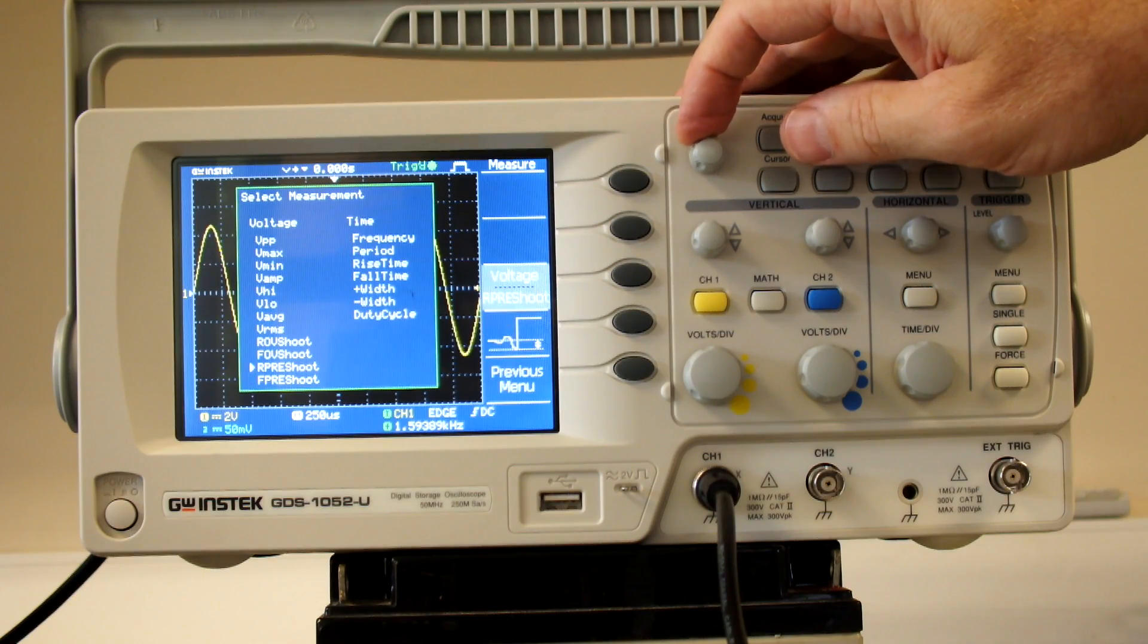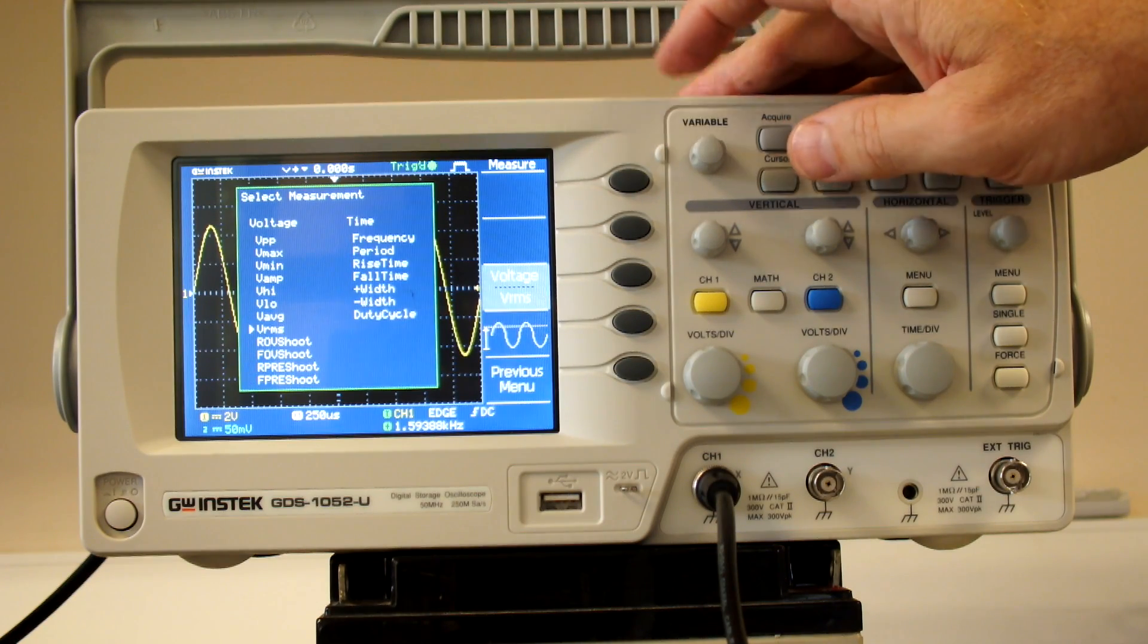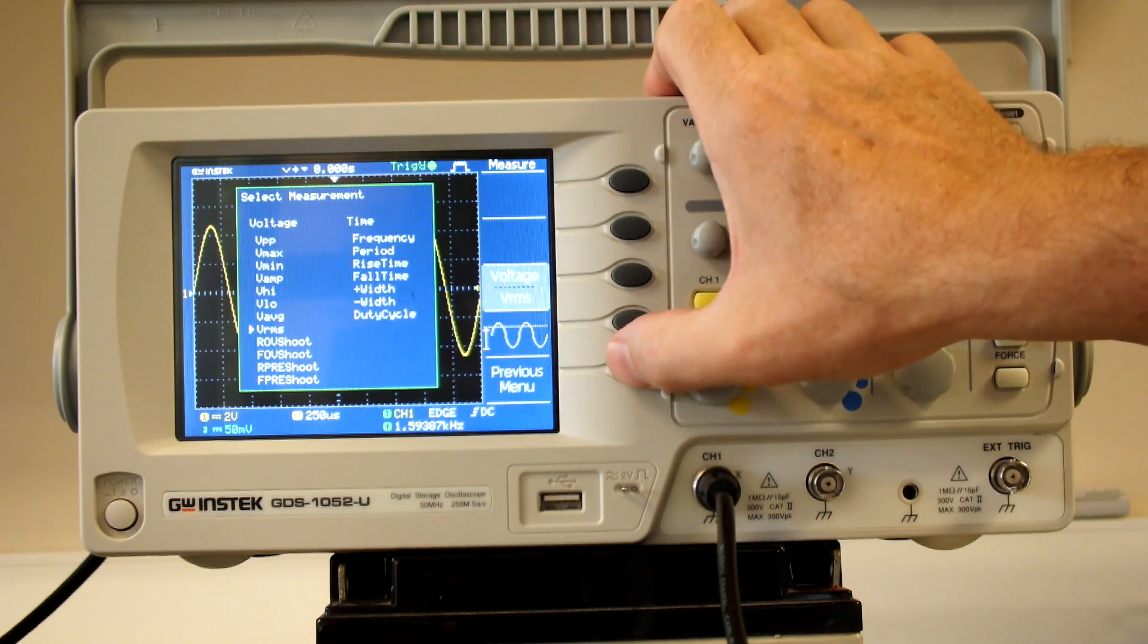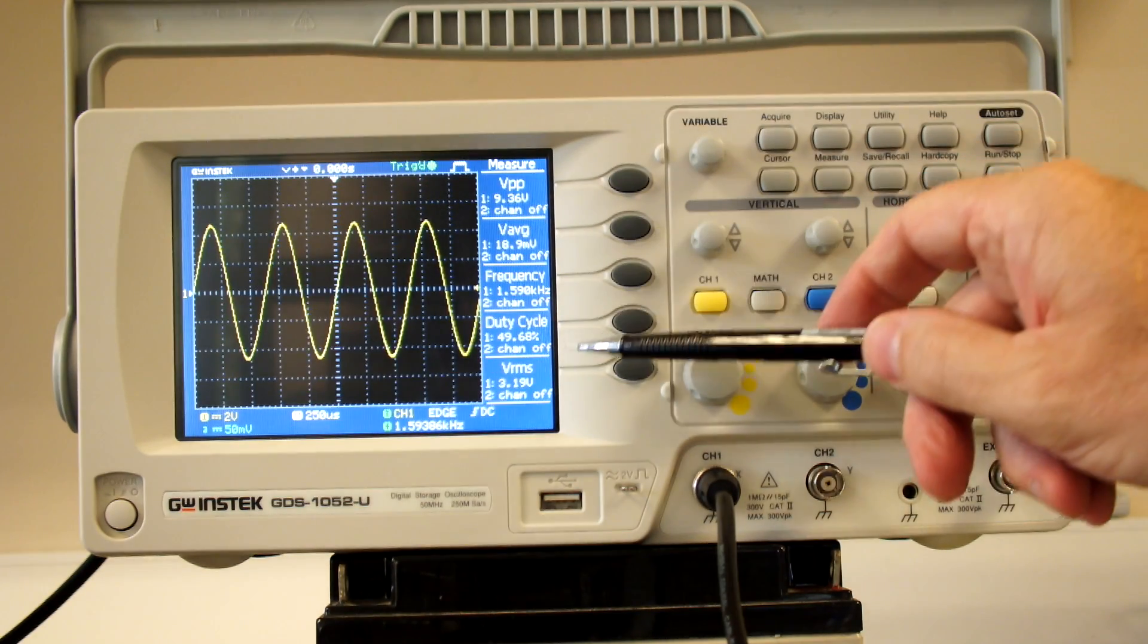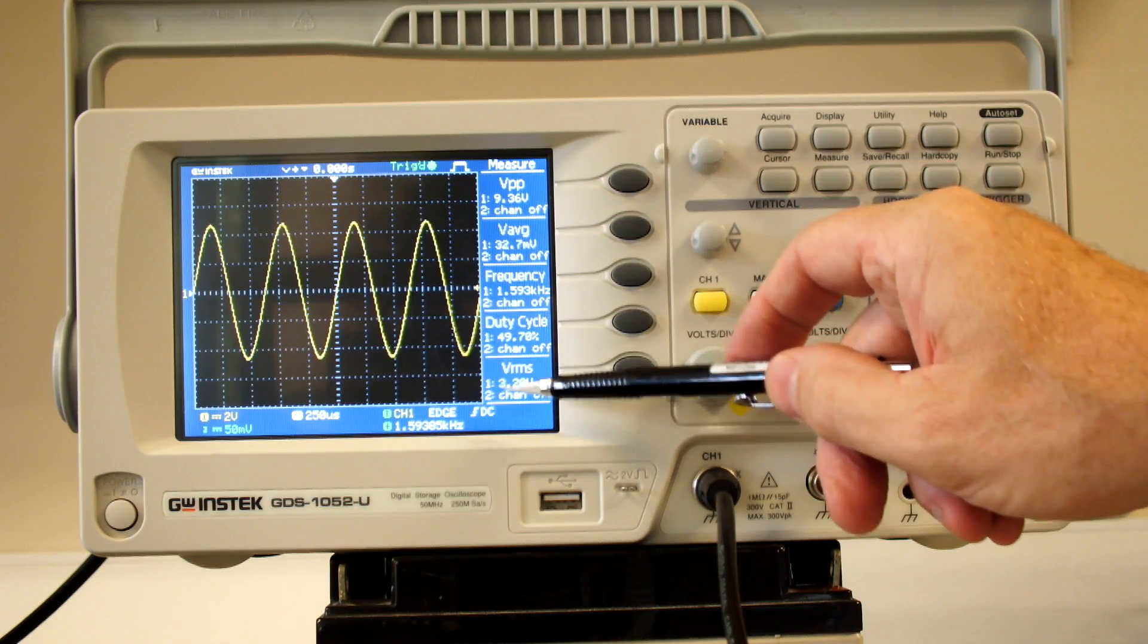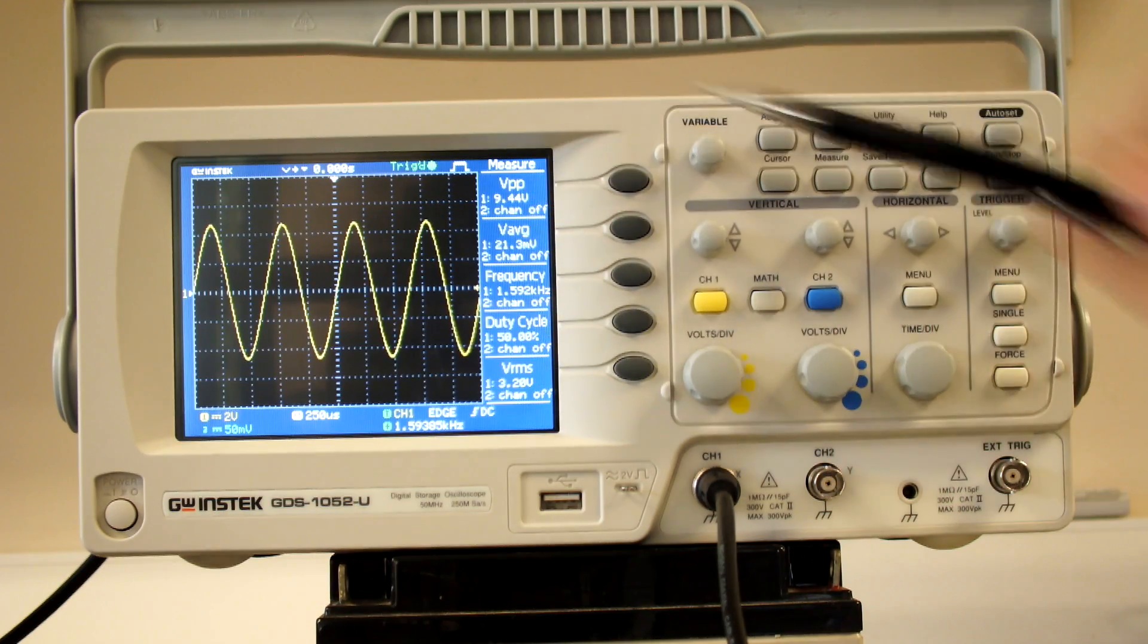I select it and I can go through this menu here. I'll perhaps want to measure volts RMS. Previous menu. Now it's displaying the volts RMS of this waveform: 3.2 peak-to-peak, 0.94.